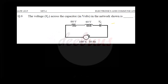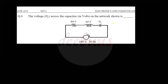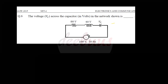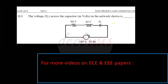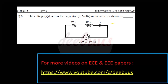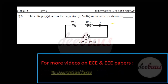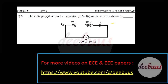Welcome to yet another discussion on GATE Electronics and Communication network-related papers. Here we are discussing GATE 2015 Set 2. Moving to the first question: the voltage Vc across the capacitor in volts in the network shown.